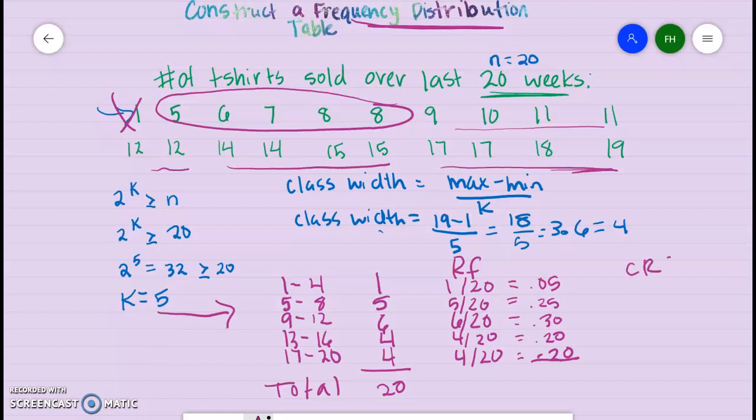Now your cumulative relative frequency, all you do is add. So 0.05 for the first one, and then 0.30, then 0.60, 0.80, and then finally 1.